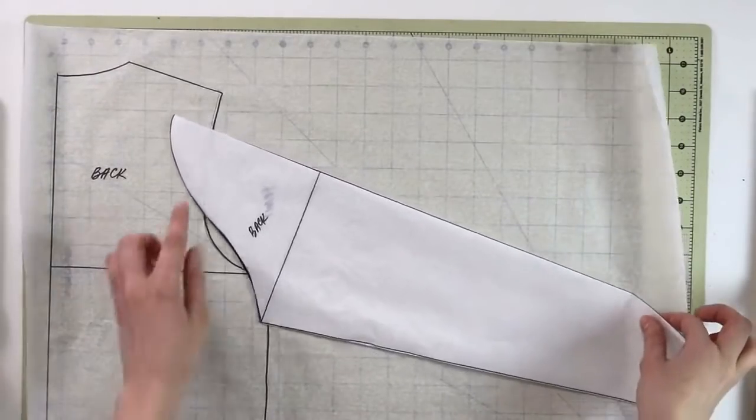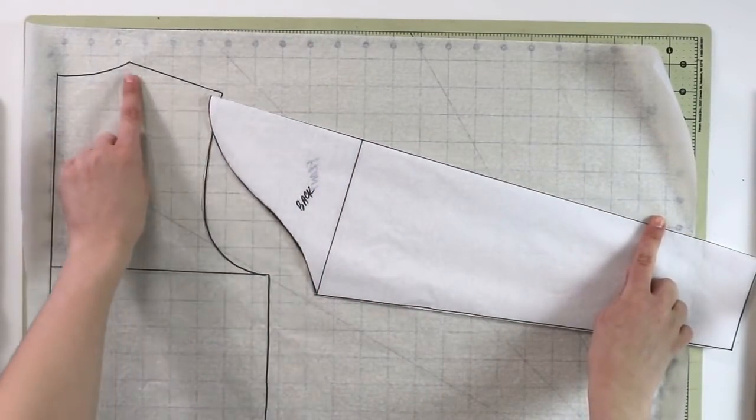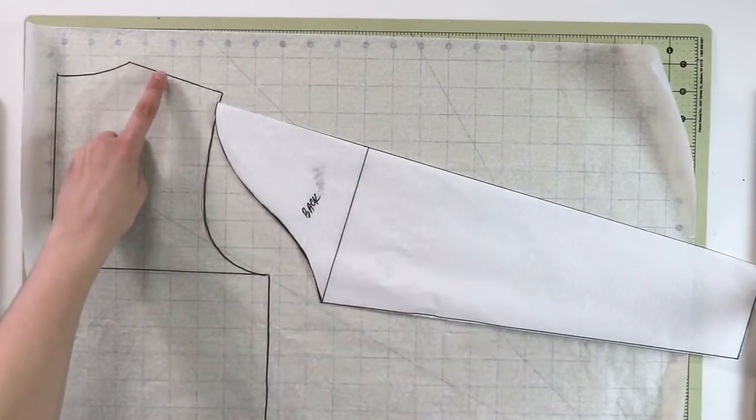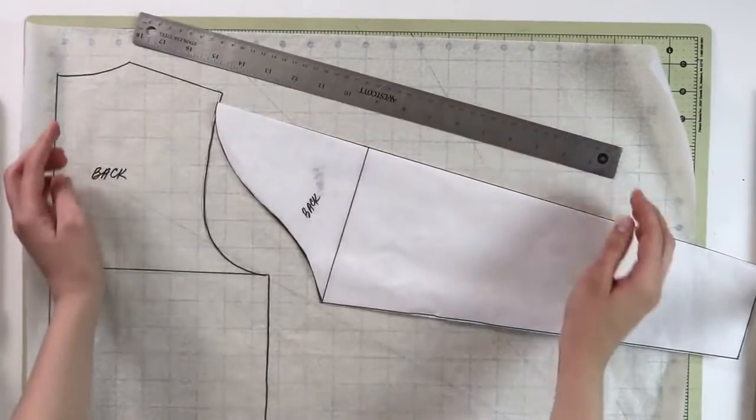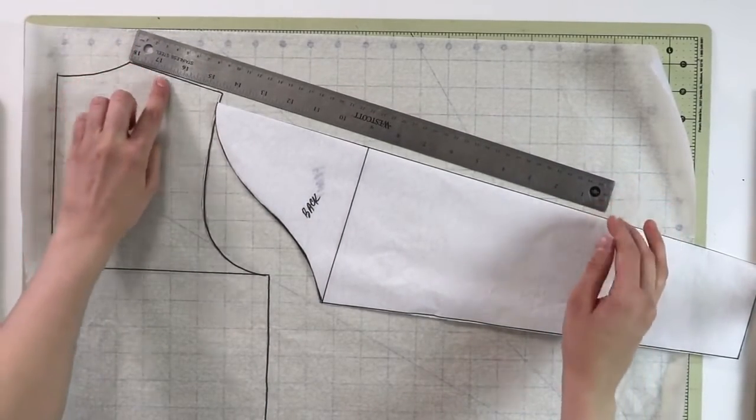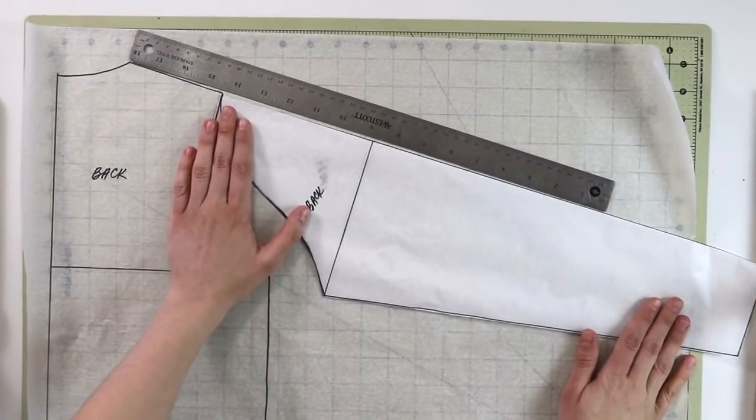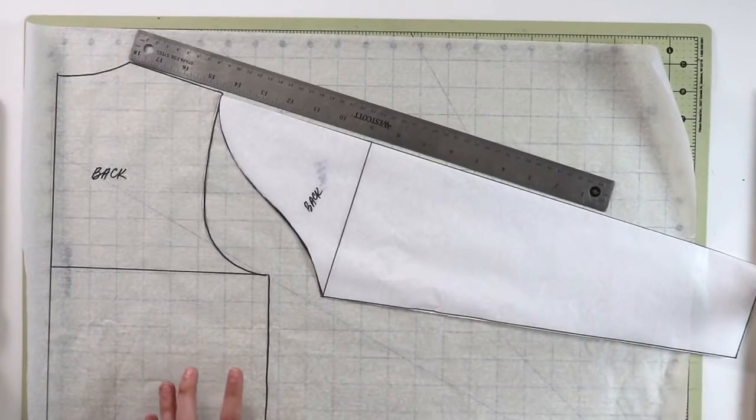Then what we want to do is we want to make sure that this line of the sleeve forms one continuous long line with the shoulder seam right over here. So if you take a ruler, that will help you quite a bit. So go ahead, take a ruler, place it like so and then place your sleeve. You see it forms one continuous straight line and that's what we want.